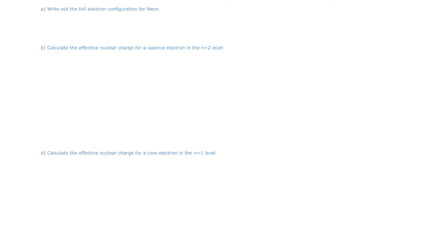Let's talk about effective nuclear charge. Let's start our problem by writing out the full electron configuration for a neon atom, which is the atom we'll be analyzing throughout this example problem. By looking at the periodic table, we can see that neon has a full 1s sublevel with two electrons, a full 2s sublevel with two electrons, and because it is a noble gas, it will have a full 2p level with a total of six electrons.